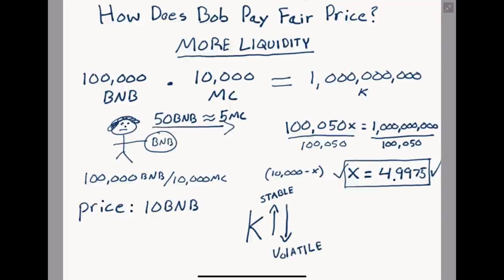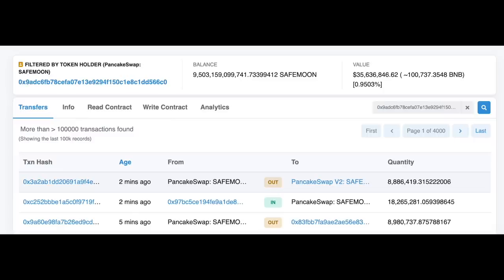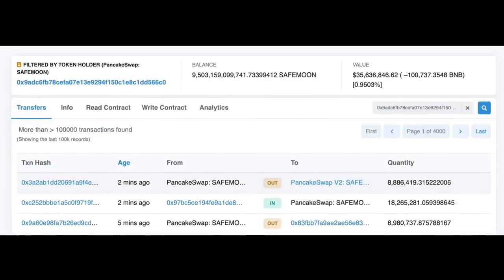The larger the K value — the constant product of our token quantities — the more stable the currency is. This is where we can really see the importance of liquidity. Since we had more liquidity in our pool in the second example, Bob was able to get a much better price for his token, and likewise when Bob sells he will have the same result. Having enough liquidity is essential for maintaining any DeFi currency — and this is where SafeMoon enters the ring.